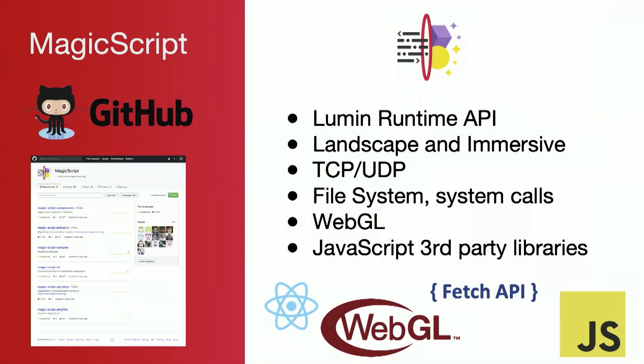Diving in a little bit more: MagicScript exposes Lumin runtime APIs — that's over 2,000 C++ APIs with direct bindings into JavaScript. With that, you can create both landscape and immersive applications. You have access to TCP and UDP connections as a developer. We exposed the file system as well as other system calls. We've added the ability to make WebGL possible on the platform, and we support third-party JavaScript libraries from NPM. Most importantly, almost everything I'm talking about today is open-sourced on GitHub.